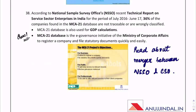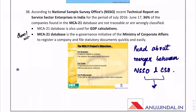The next is regarding the National Sample Survey Office. There is a planned merger between the NSSO and CSO. What is the name of the new entity? It is the National Statistics Office — that is the name of the organization formed after merging NSSO and CSO.